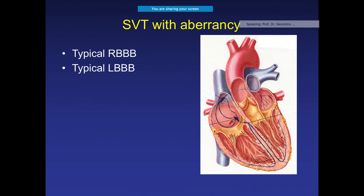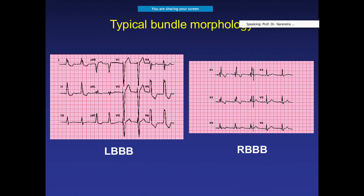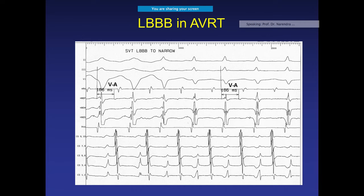SVT with aberrancy is typically associated with a bundle branch block — either left bundle branch block or right bundle branch block. So when you see a wide QRS tachycardia with a bundle branch block pattern, SVT with aberrancy is a key consideration.